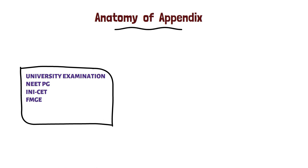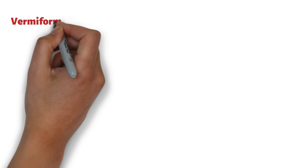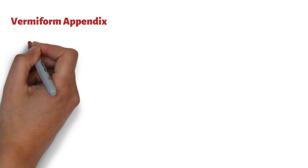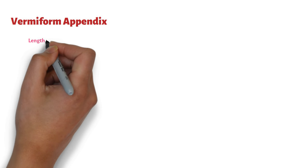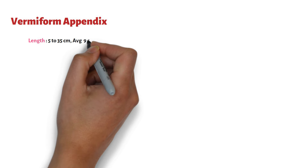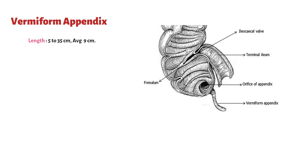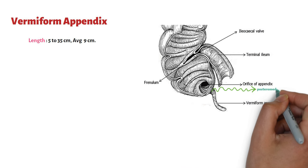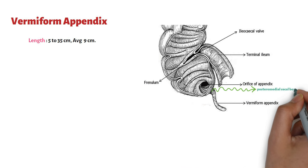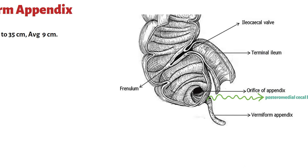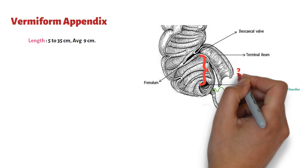Today we are going to talk about the anatomy of the appendix. The adult appendix ranges from 5 to 35 cm and on an average is approximately 9 to 10 cm in length, arising from the posterior middle wall of the cecum, approximately 3 cm below the ileocecal valve.